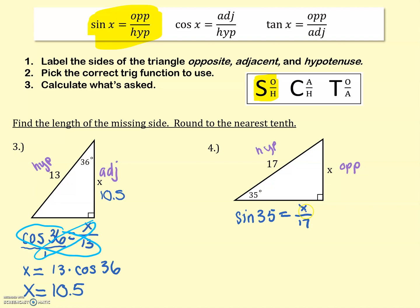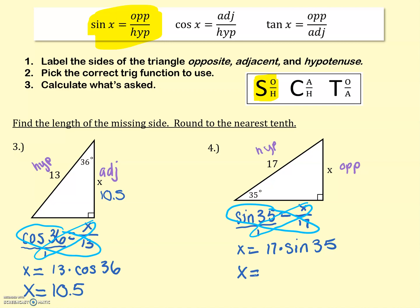In order to find x, we're cross-multiplying. Write the sine of 35 as a fraction over 1. When we cross-multiply, we have x equals 17 times the sine of 35. When you put that in your calculator and round to the nearest tenth — one decimal place — you'll get x equals 9.8. So the length of this side is 9.8, which again makes sense with the hypotenuse being the longest side.